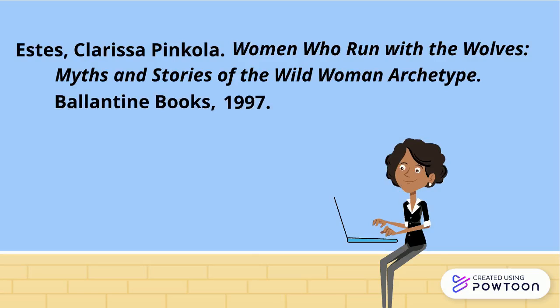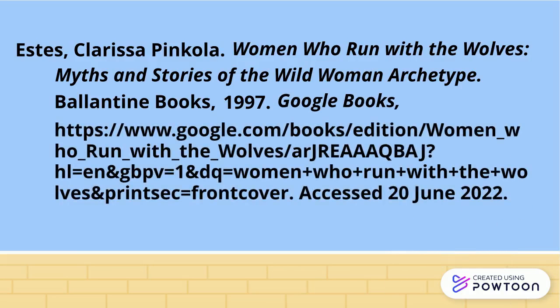If you're citing a book from a database or website, you will also include the database or website title in italics after the publication date, followed by a comma, then the URL, followed by a period. For websites, you can also include an access date, especially if the webpage has no publication date, or you suspect the URL may change.